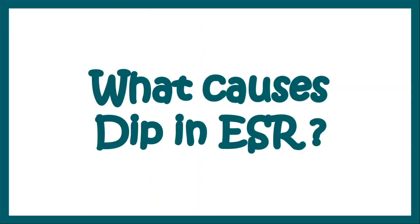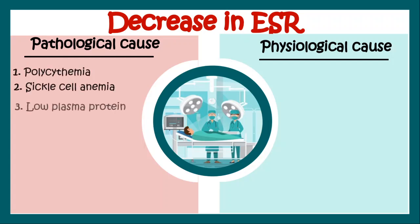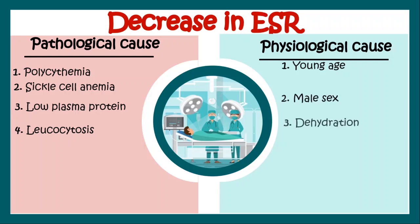Sometimes ESR dips also. This decrease in ESR can be pathological as well as physiological. Pathological causes include polycythemia, sickle cell anemia, low plasma protein, as well as leukocytosis. Whereas physiological causes include young age, male sex, and dehydration.